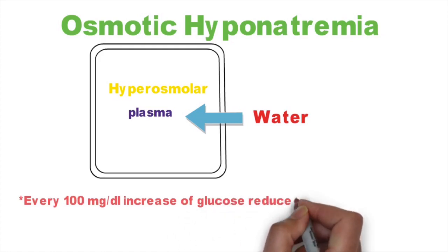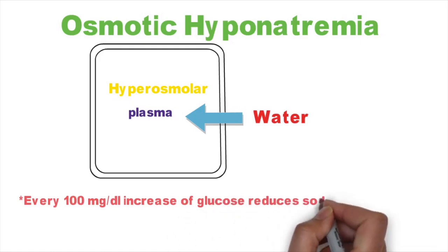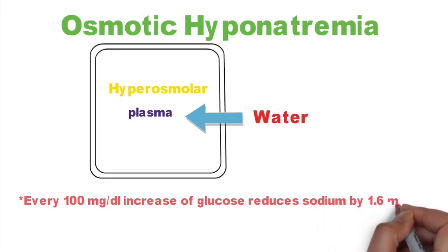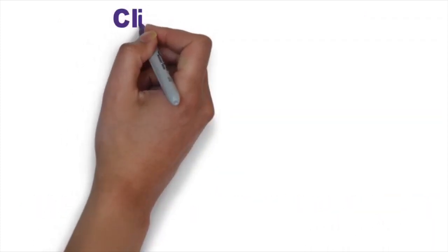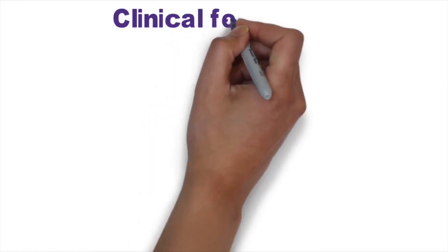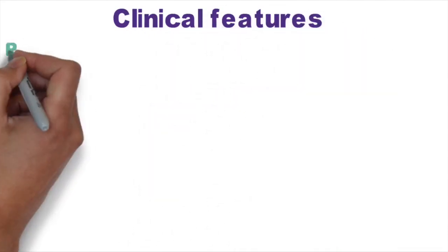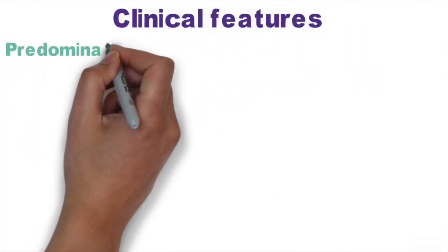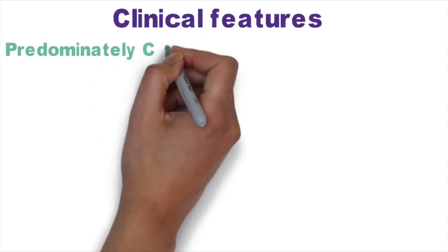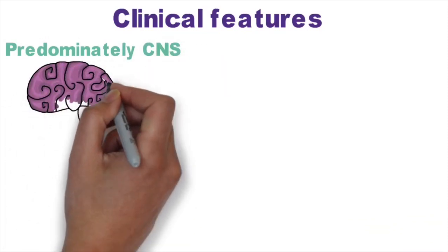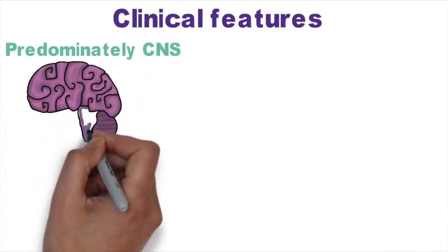Every 100 mg per dL increase in glucose causes a decrease in sodium concentration by 1.6 mEq per liter. Now let's talk about the clinical features of hyponatremia. Clinical features are predominantly neurologic, and symptoms depend on how fast sodium falls.